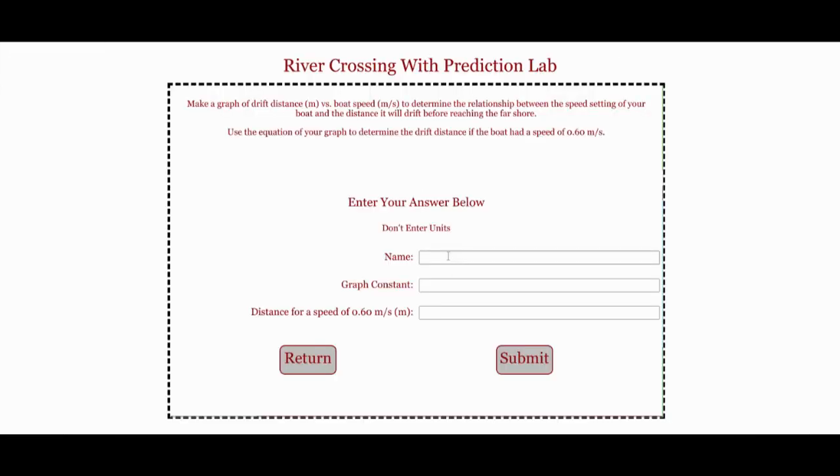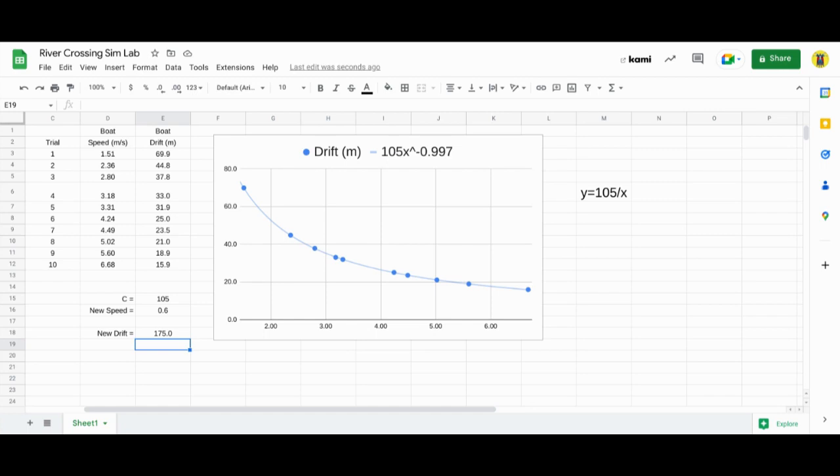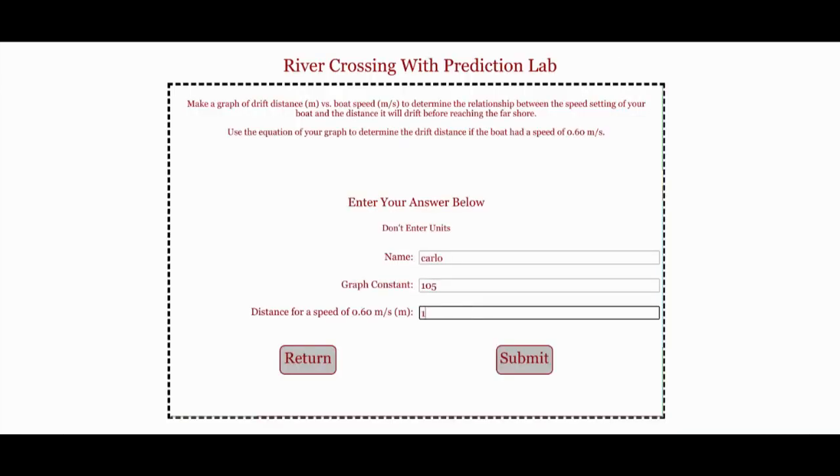Put my name in. Graph constant was 105. Let's make sure we get this all right. And the new drift is 175. Let's see how we did.